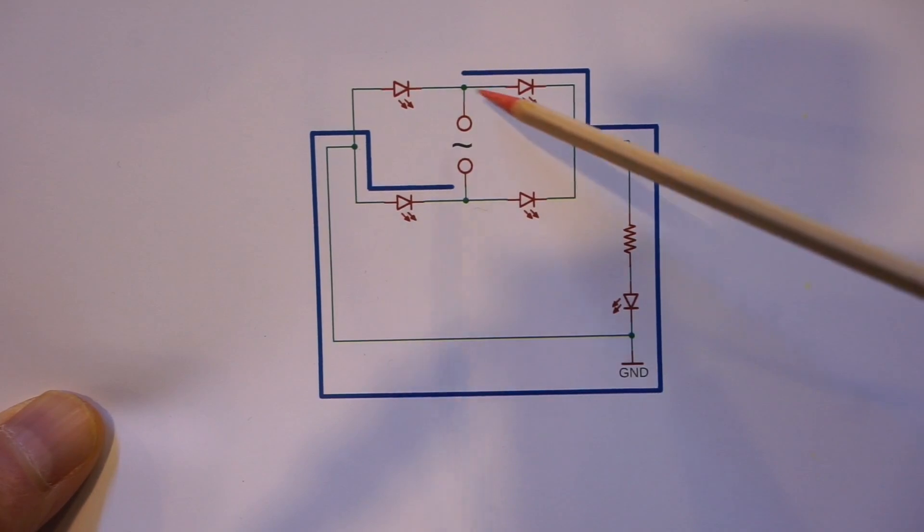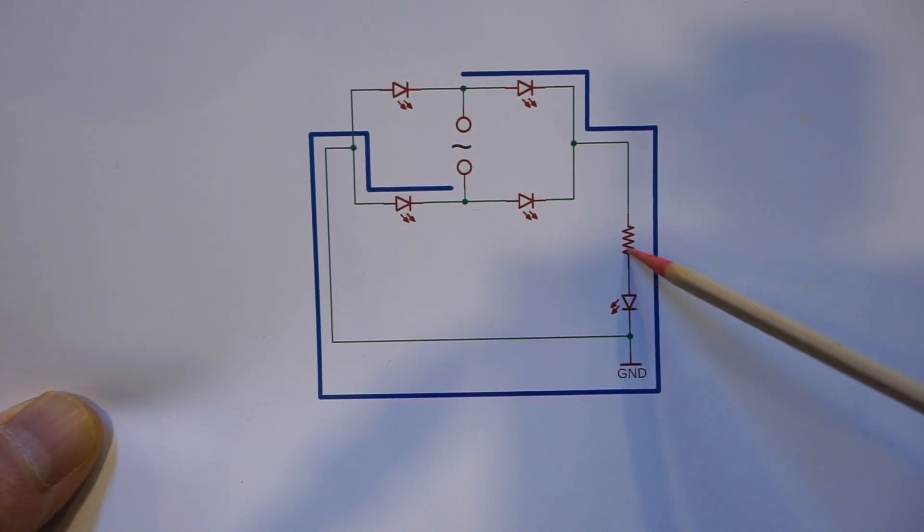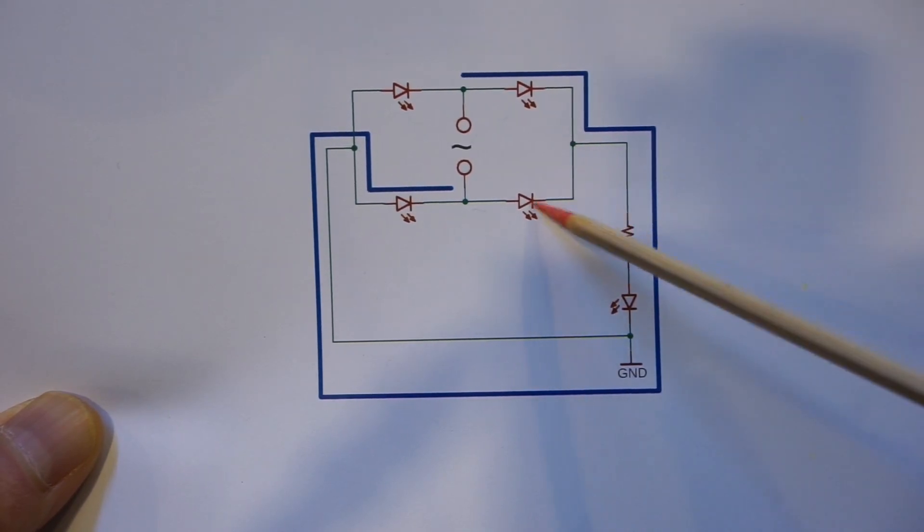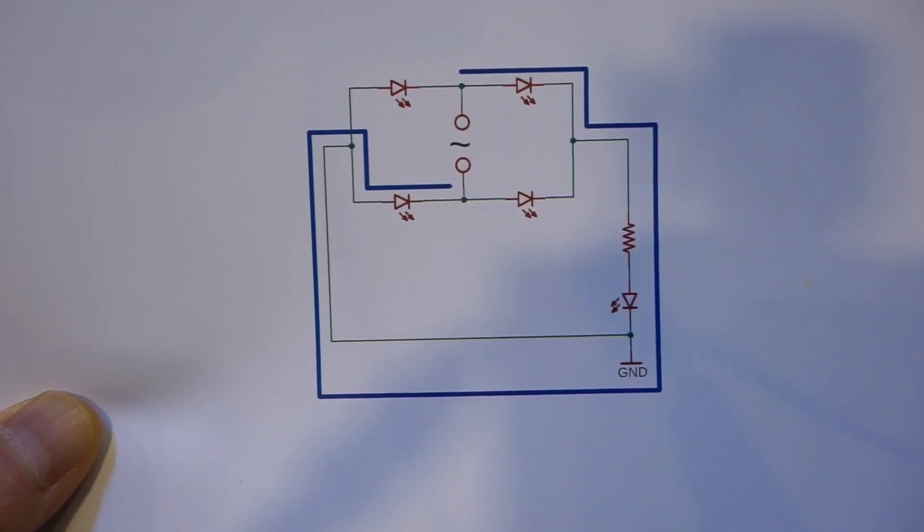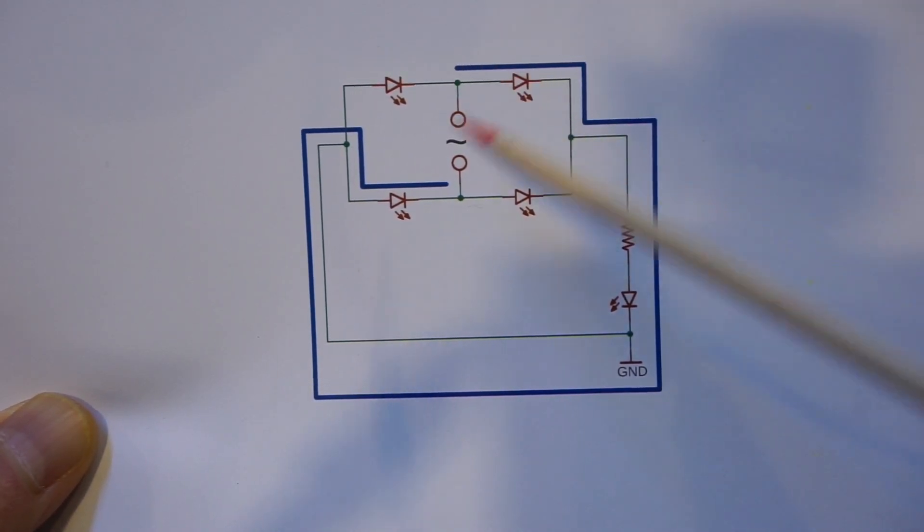Now during the negative half, the current actually flows the alternate way and also through the load LED back through this LED back here. So when in operation, I would expect these two sets of LEDs are going to be illuminated in alternate fashion.